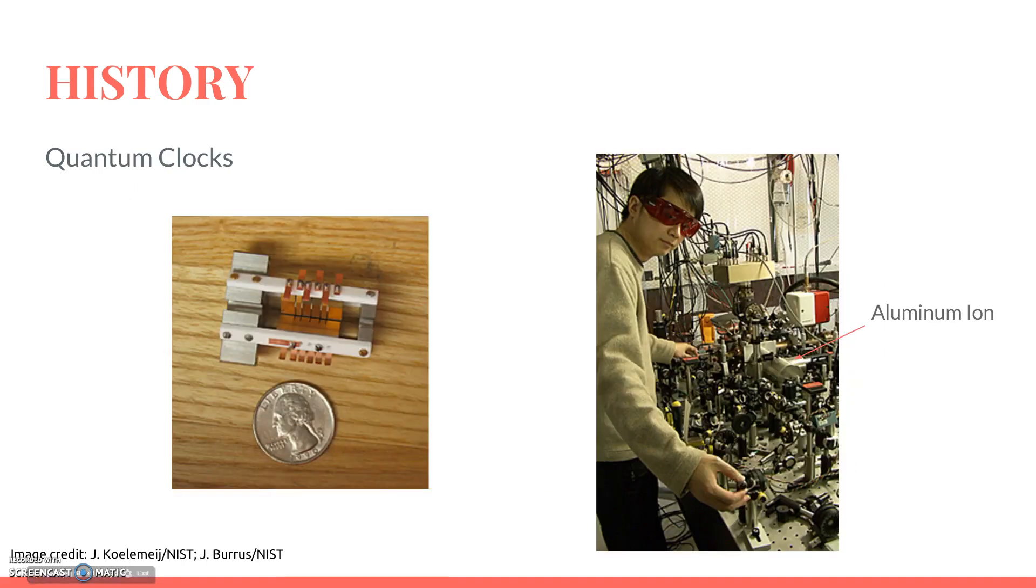Another application of Quadrupole Ion Traps is in making very accurate clocks. The current second standard is based on the electronic transition frequency of cesium-133 atoms between two hyperfine ground states. However, the so-called quantum clock is based on the ultraviolet frequency vibrations of a trapped aluminum ion. Quantum clocks provide an accuracy over 37 times that of the cesium standard, deviating by one second every three and a half billion years.